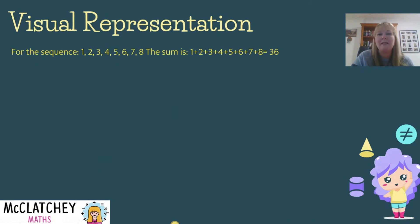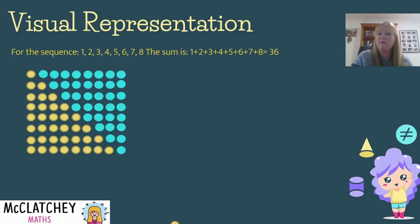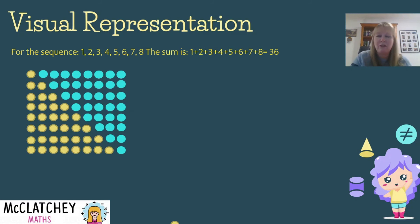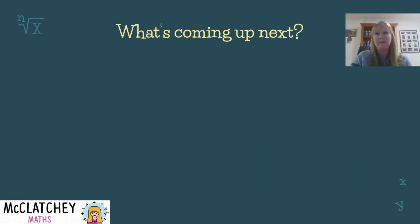Here's a visual representation using the same numbers 1 through 8, represented as yellow dots. Stacking them forms a triangle. We then flip that triangle upside down with blue circles — 1 + 8 = 9 in every row. This creates a rectangle with 8 rows and 9 items per row, giving 72 total. Since we've doubled our sequence, we divide by 2 (n over 2) to get 36 — that's why the formula works.